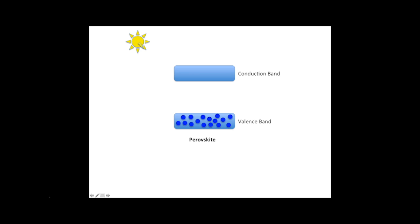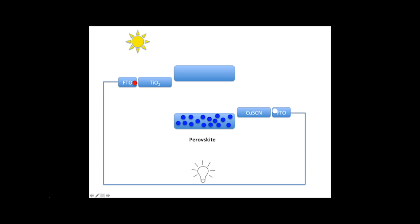The perovskite layer absorbs light and creates electrons in the conduction band and holes in the valence band. On one side, titania selectively transfers electrons from perovskite to the FTO anode. On the other side, copper thiocyanate selectively transfers holes through the carbon particles to the FTO cathode. Once we have electrons on the anode and holes on the cathode, we can hook it up to power an external device like an LED.